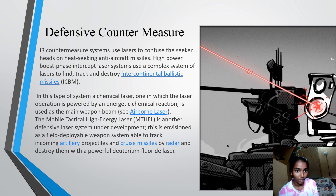Defensive Countermeasures. IR countermeasure systems use lasers to confuse the seeker heads on heat-seeking anti-aircraft missiles. High power boost phase intercept laser systems use a complex system of lasers to find, track and destroy intercontinental ballistic missiles. A chemical laser, in which the laser operation is powered by an energetic chemical reaction, is used as the main weapon beam. The mobile tactical high energy laser is another defensive laser system under development, envisioned as a field deployable weapon system able to track incoming artillery projectiles and cruise missiles by radar and destroy them with a powerful deuterium fluoride laser.